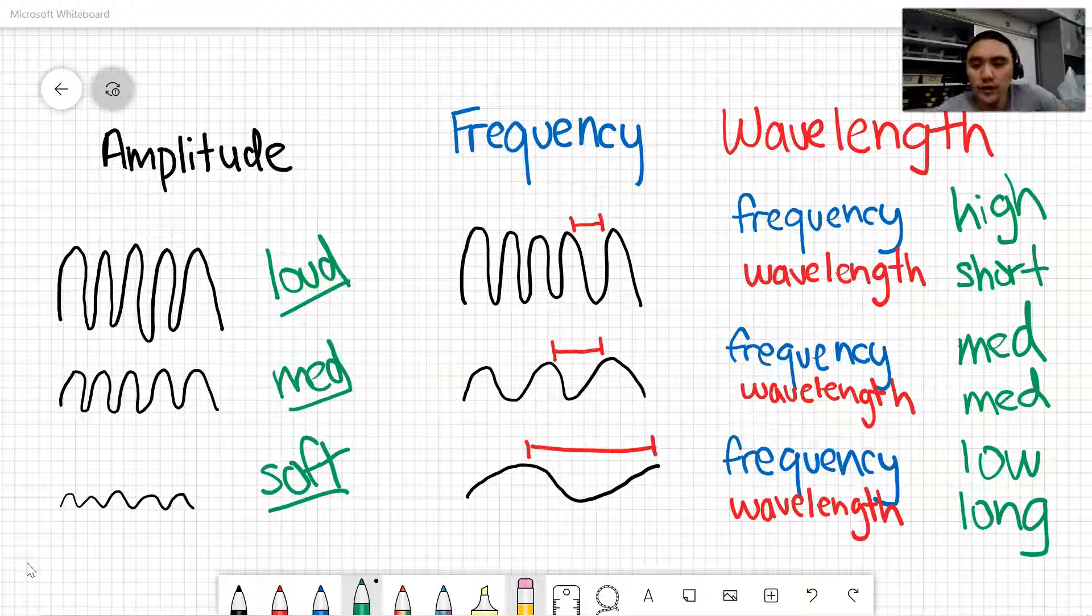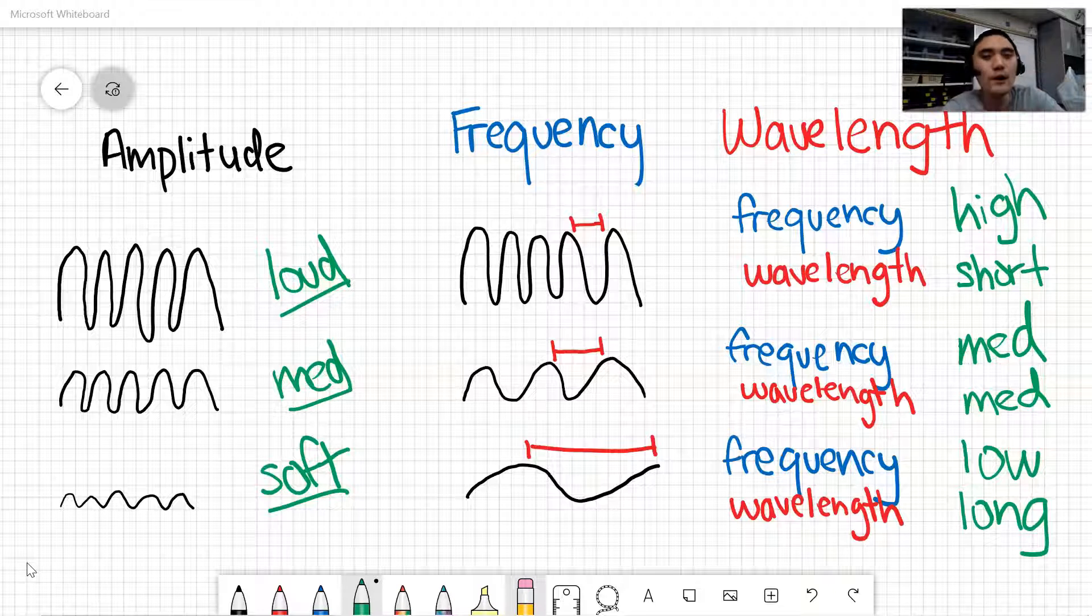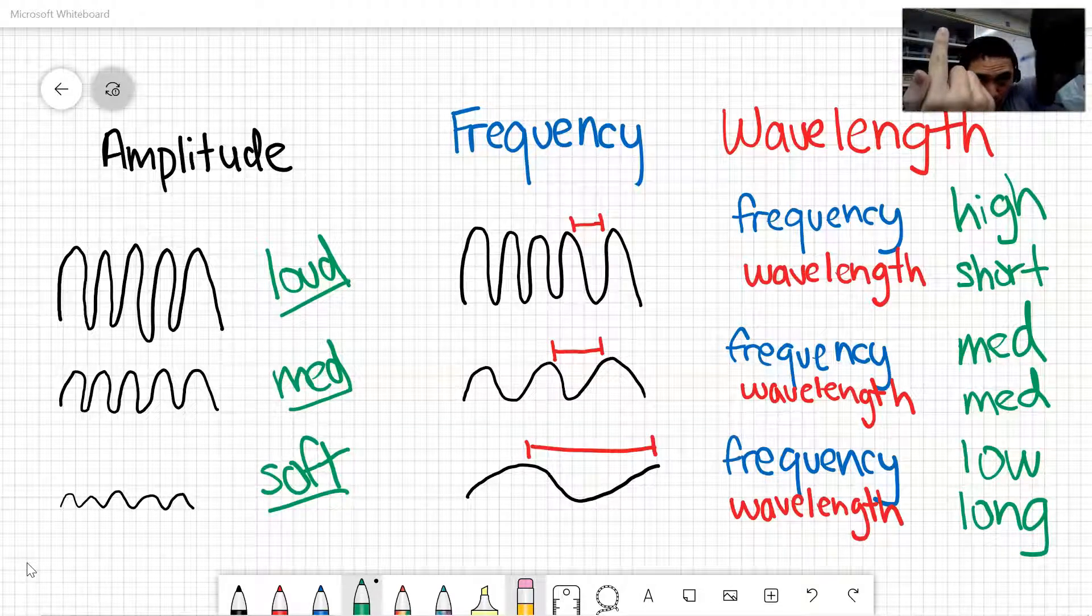So once again, as a quick recap, amplitude affects the volume of a wave. The taller the wave is, the louder the thing is, and the shorter the wave is, the softer the sound will get. With these two, frequency and wavelength - frequency and wavelength are inversely related to each other. So if one goes up, the other one goes down.